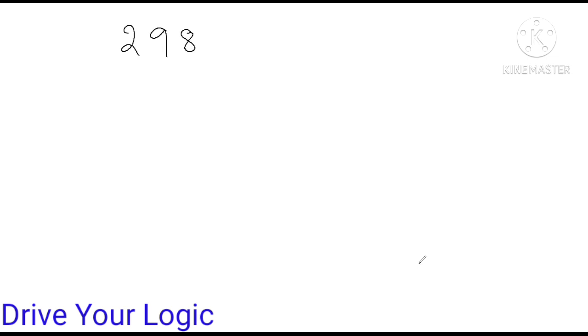Let me take a big number: 2,989,723. I'll write down the place values — ones, tens, hundreds, thousands, ten-thousands, then lakh and ten-lakh in the Indian system.